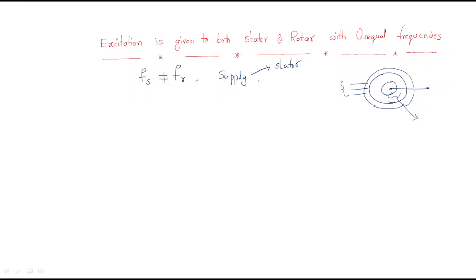Up to now, we only discussed supply given to the stator. To understand this new concept, let's take an example. Assume the stator is given a supply with frequency of 50 Hz and the stator has 6 poles.